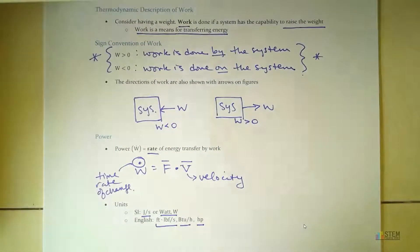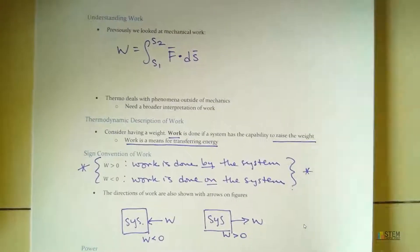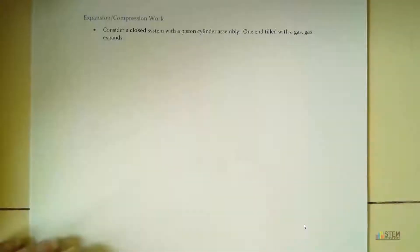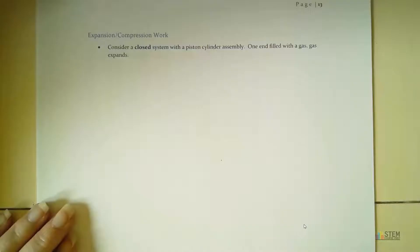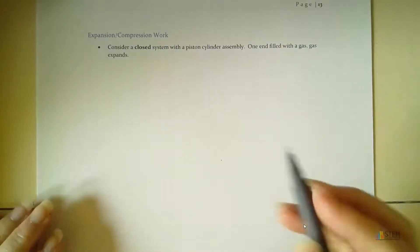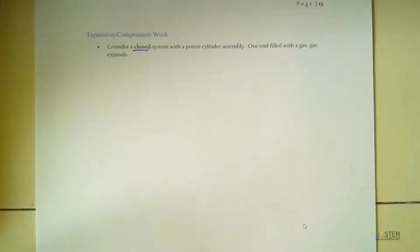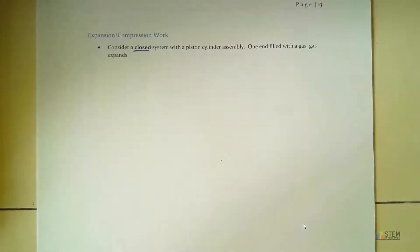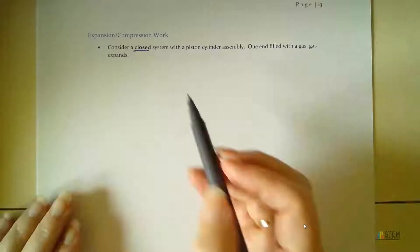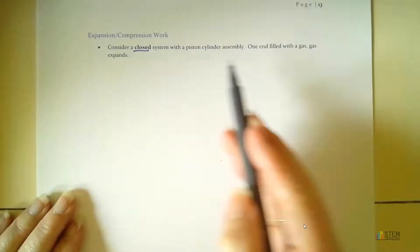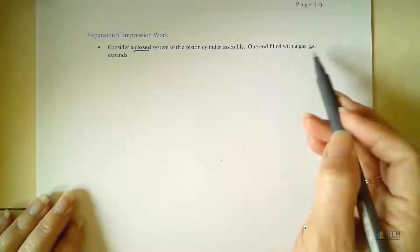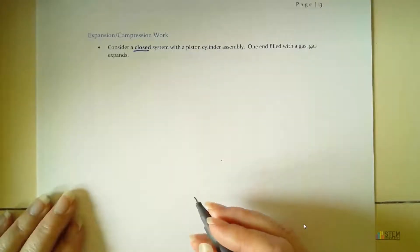So now let's get into an application of work. So this is going to be over expansion compression work. And what we're going to do for this is we're going to consider a closed system. Remember, closed meant that there was no... Let's try to zoom in again. There we go. That means there's no mass transfer across the boundary. So the mass you start with is the mass you end up with. So we've got a closed system with a piston cylinder assembly. One end is going to be filled with a gas. And then that gas is going to expand. So that's what we're going to start with.